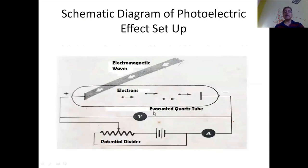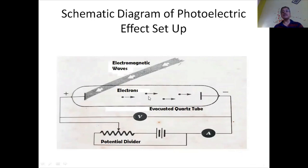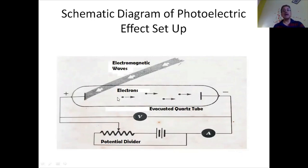In this diagram, we have an evacuated quartz tube in which we have an anode and a cathode, and through the outer circuit, a potential divider is applied so that a potential difference can be maintained between the anode and the cathode. An electromagnetic wave is irradiated on the anode, and the ejected electrons rush toward the cathode and after reaching the cathode, they constitute a current.